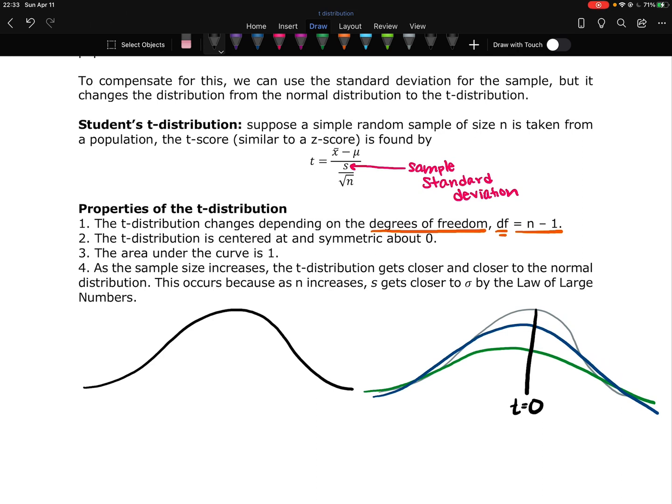And then I just stated this, but we'll say it again. As the sample size increases, the t-distribution gets closer and closer to the normal distribution. This occurs because as n increases, the sample standard deviation gets closer to the population standard deviation by the law of large numbers.